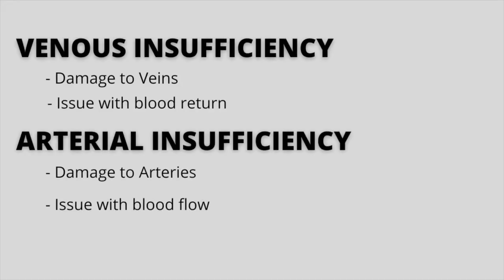I will link that video up so you can catch up before watching this one. What's the difference between arterial insufficiency ulcers and venous insufficiency ulcers? Arterial insufficiency ulcers are a result of damage to the arteries, and venous insufficiency ulcers are a result of damage to the veins. Arterial ulcers are a problem with blood flow, while venous insufficiency is a problem with blood return. Venous insufficiency ulcers are way more common than arterial insufficiency ulcers.